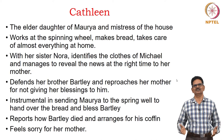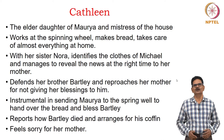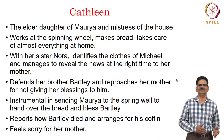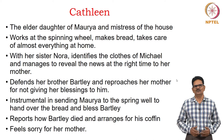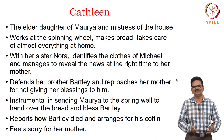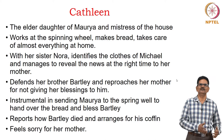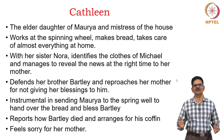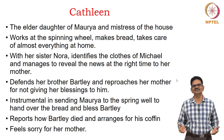Kathleen is the elder daughter of Maurya, called the mistress of the house. She works at the spinning wheel, makes bread, and takes care of almost everything at home. With her sister Nora, she identifies the clothes of Michael and manages to reveal the news of death at the right time to their mother. She defends her brother Bartley and reproaches her mother for not giving him her blessing. She is instrumental in sending Maurya to the spring well, and arranges for Bartley's coffin in the absence of any son.